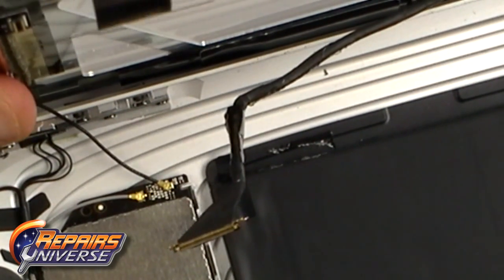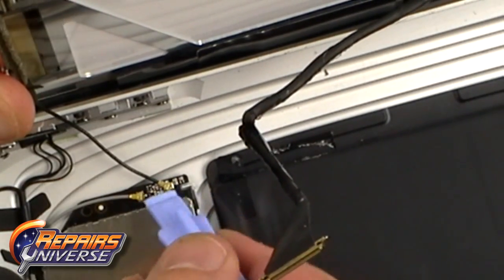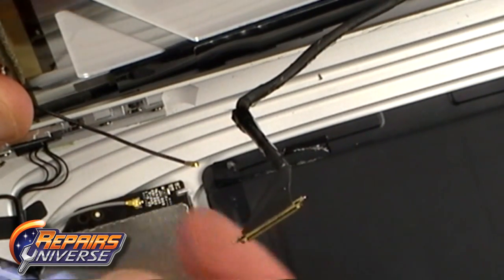The next cable on the iPad 3G version is an antenna cable. Use a safe pry tool to release this. It simply pops off.